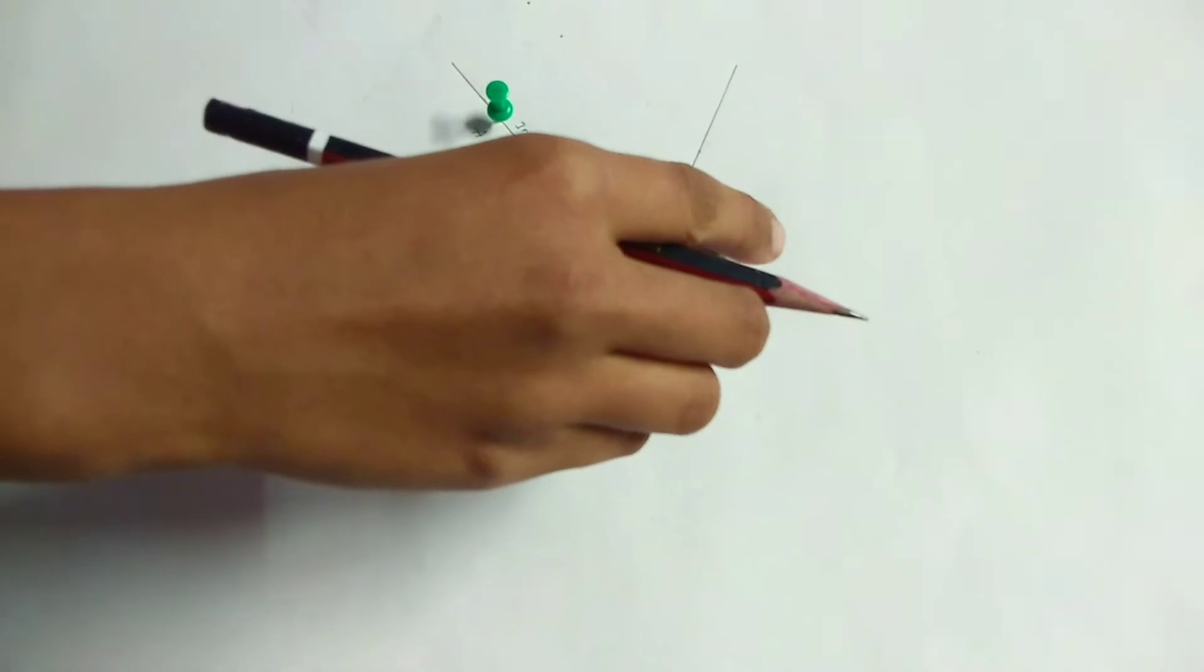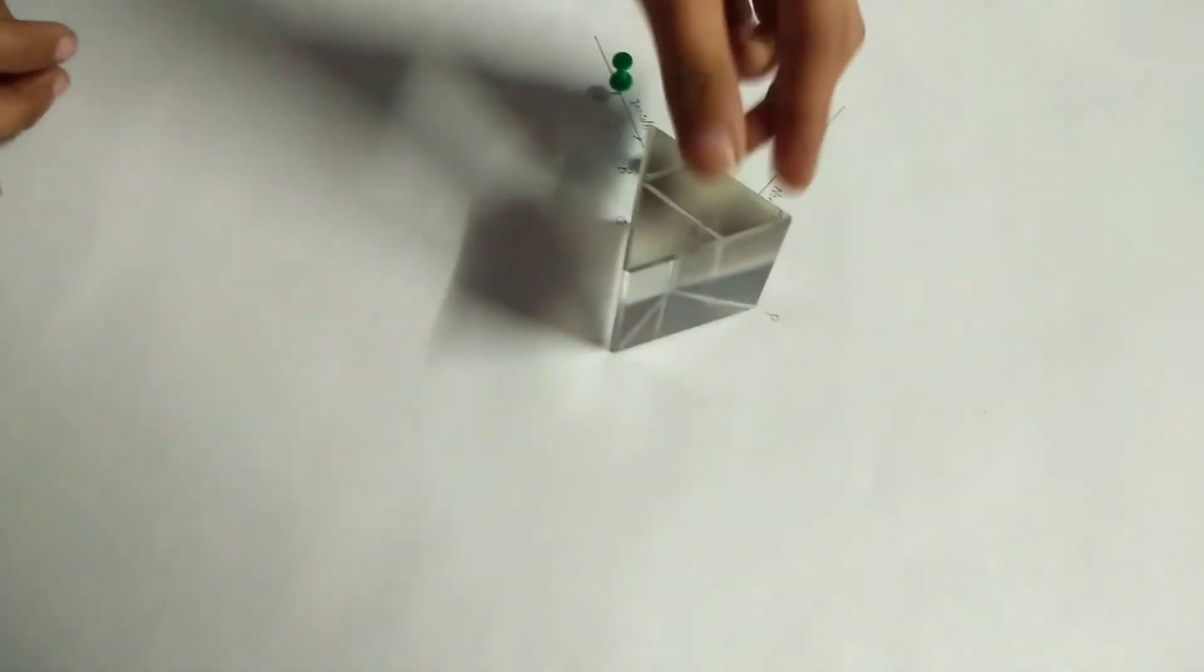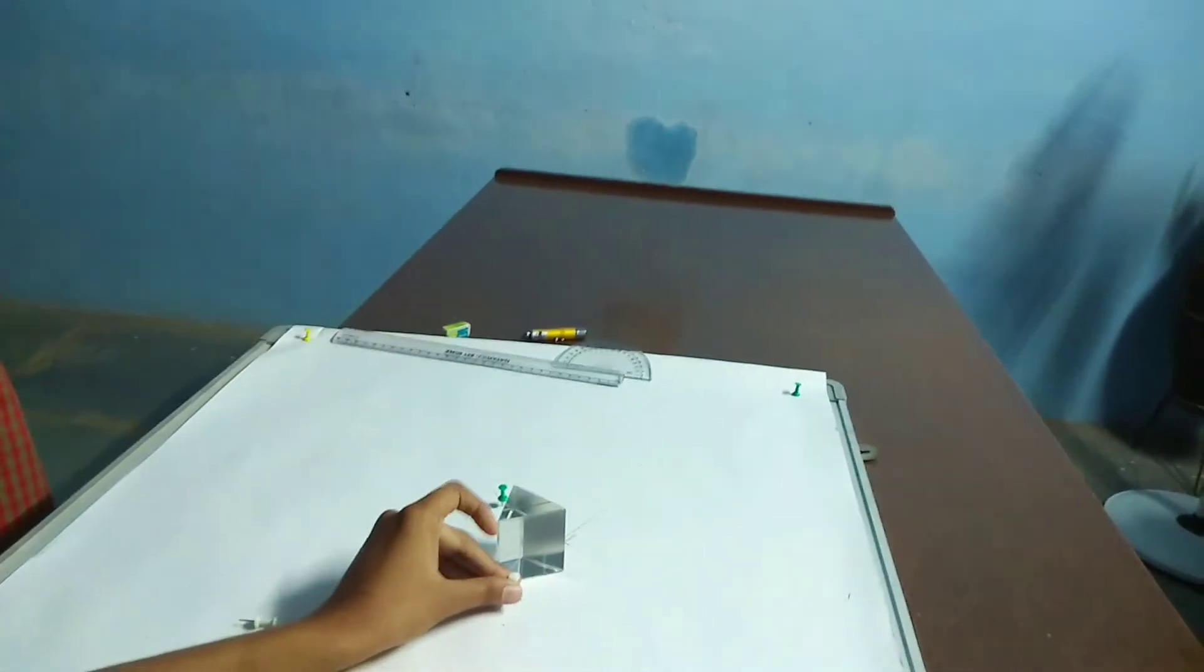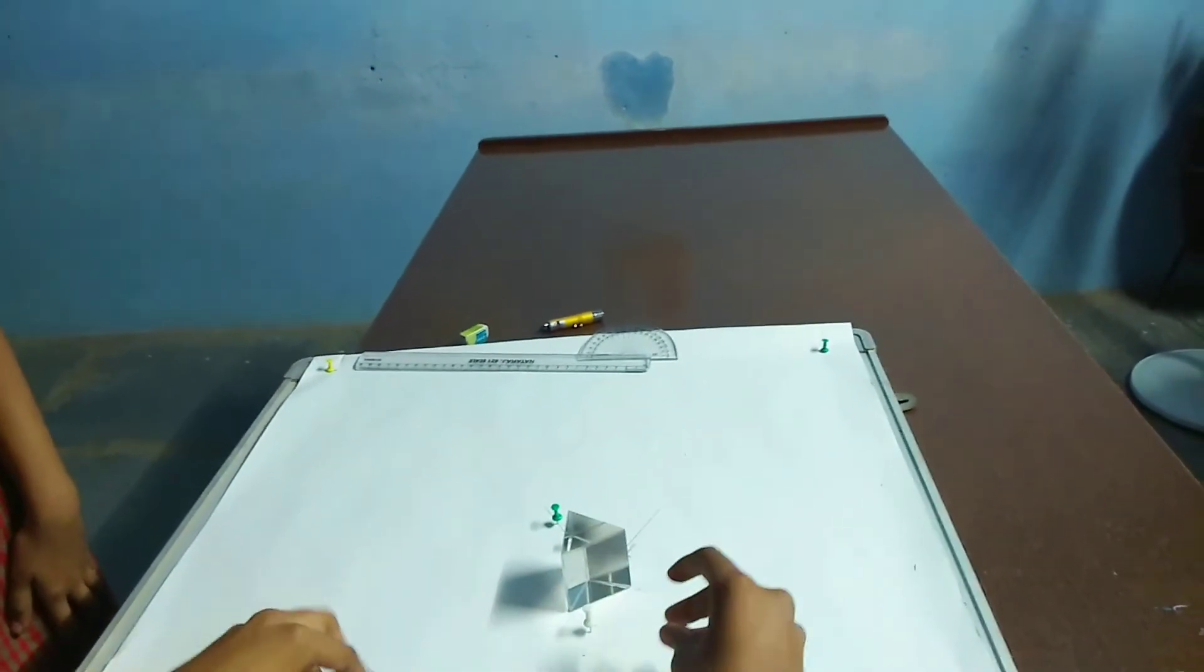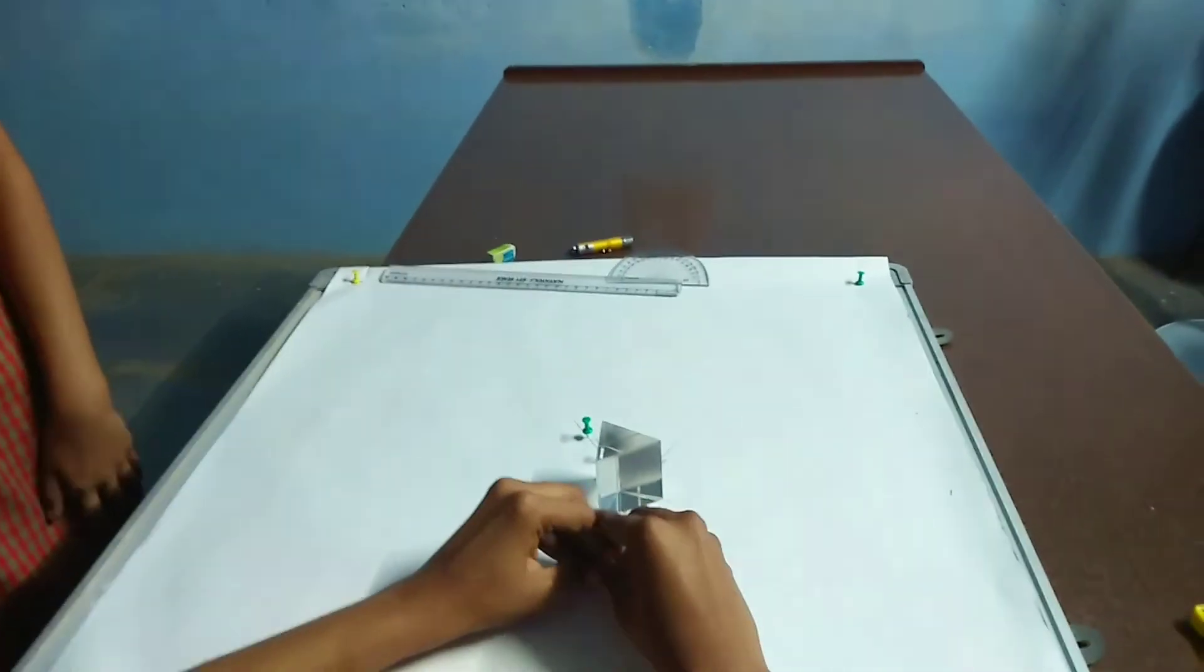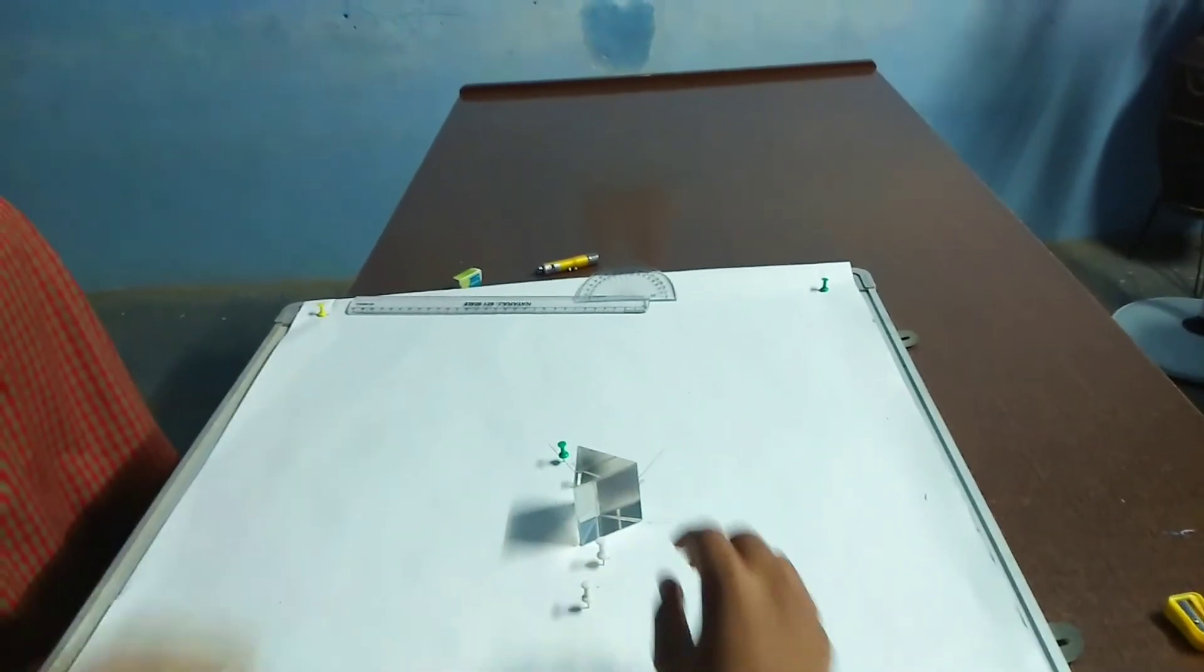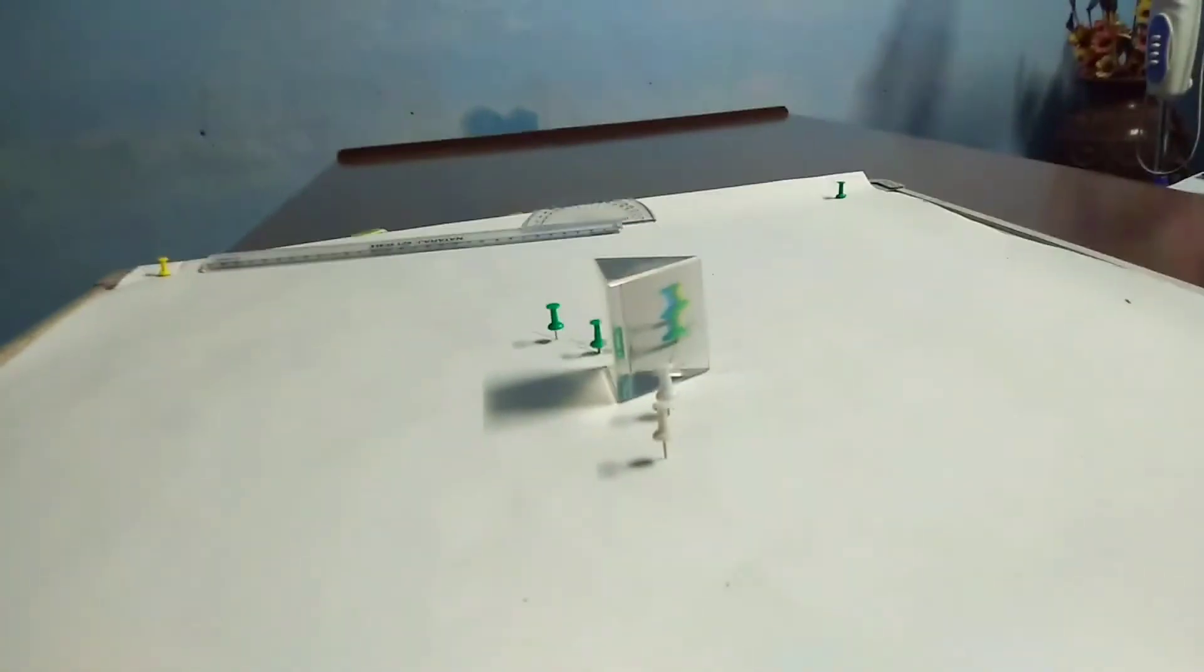Place the prism again on its position. Now, look for the images of pins. Fix two pins in such a way that all four pins lie in a same straight line.